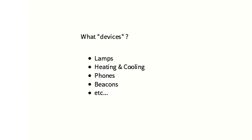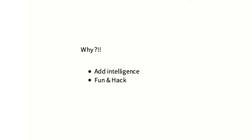So what kind of devices do you want to control or get data from? Lamps, heating and cooling devices, phones, beacons, health devices — everything that feeds you data. Even your bike, your car, or whatever. Because we want to add intelligence to our devices.